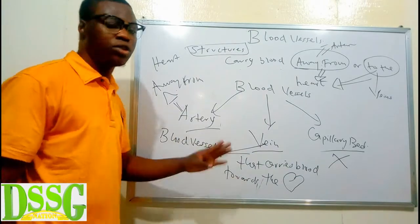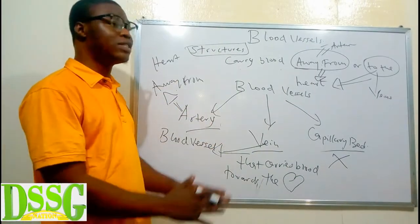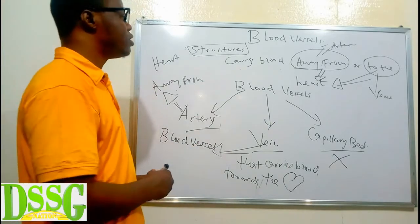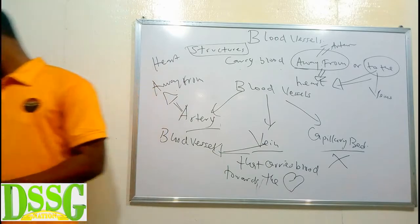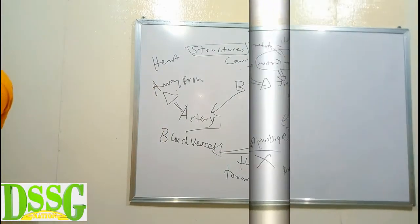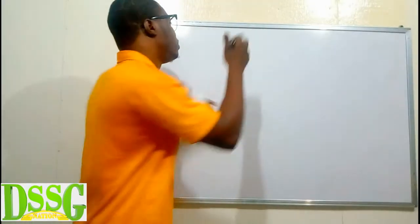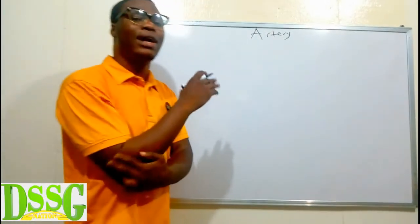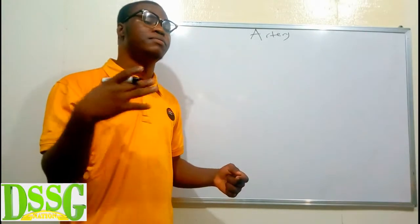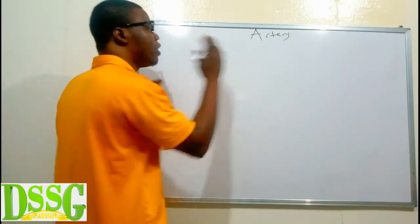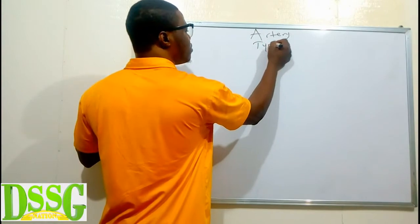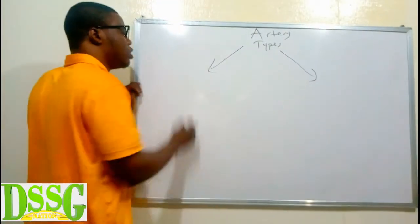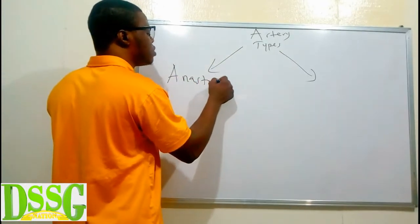So let's start with arteries. We said arteries are blood vessels that carry blood away from the heart. We now have two types of arteries: the first type is called anastomosis arteries, and the second type are called end arteries.